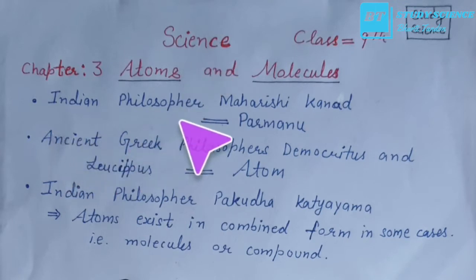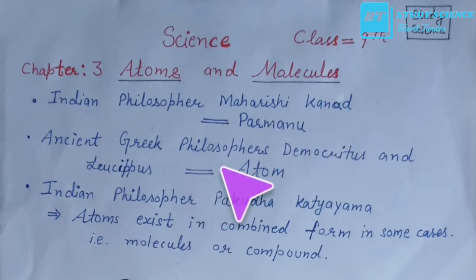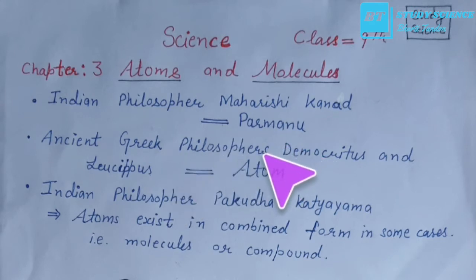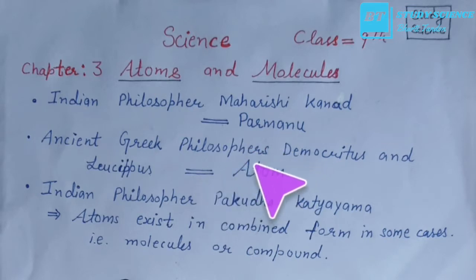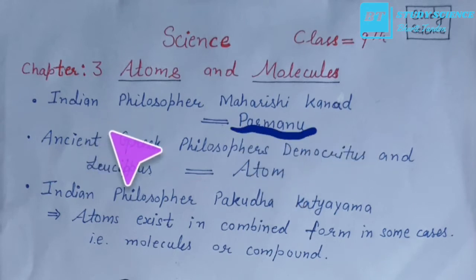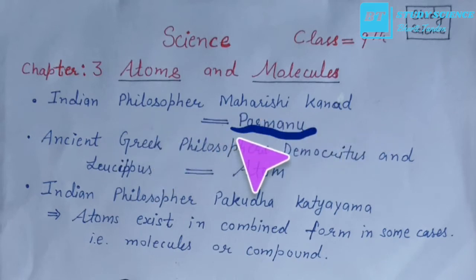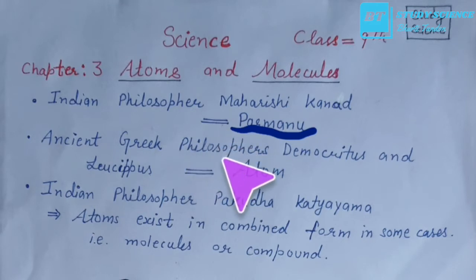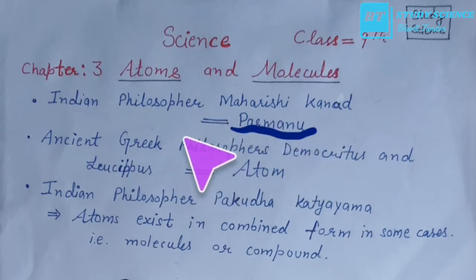Around 500 BC, an Indian philosopher Maharshi Kant proposed that matter is divisible — if we go on breaking matter we will get smaller and smaller particles, and ultimately these particles cannot be further divided. 500 BC के दौरान Maharshi Kant ने कहा कि matter divisible होता है और तोड़ते जाएं तो smaller और smaller particles मिलते हैं जो further divide नहीं होते।